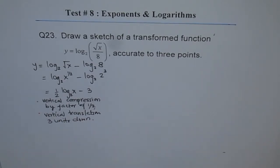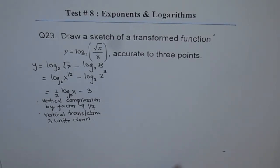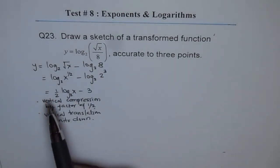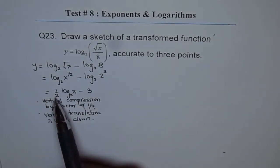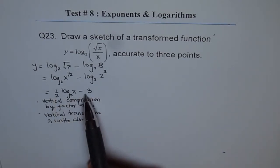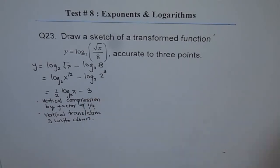Now to plot this graph, what we should do is we can take some critical points and then sketch a graph, or we can follow the steps like we can sketch log₂(x) graph and then do vertical compression by a factor of half and move it 3 units down. So either way. I'll prefer in this particular example to take some values and then sketch it.